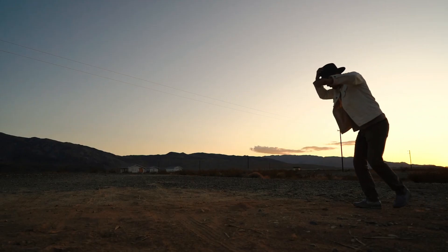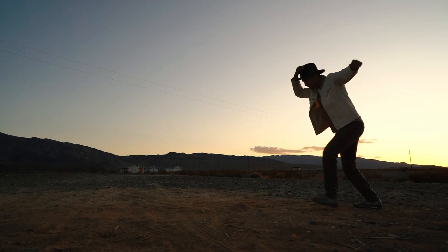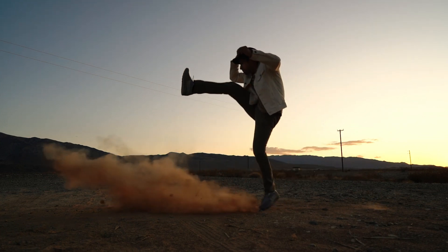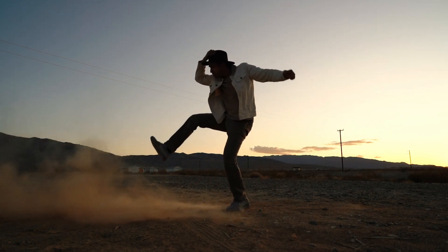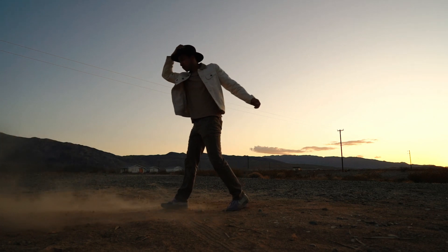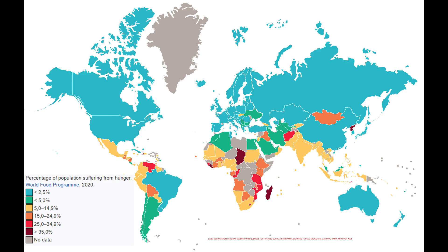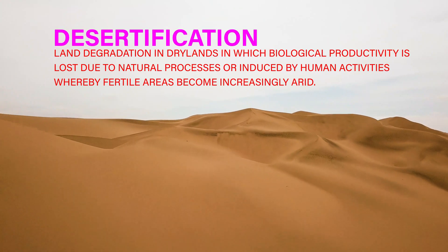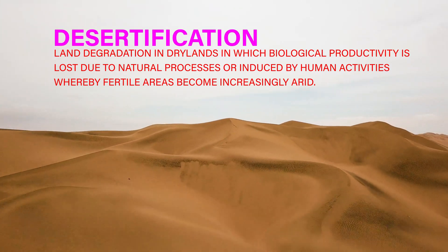The consequences of land degradation can be far-reaching, including soil fertility loss, species habitat destruction, biodiversity loss, soil erosion, and excessive nutrient runoff into lakes. Land degradation also has severe consequences for humans, such as starvation, sickness, forced migration, cultural harm, and even war. At its worst, land degradation can result in desertification, land abandonment, or both.